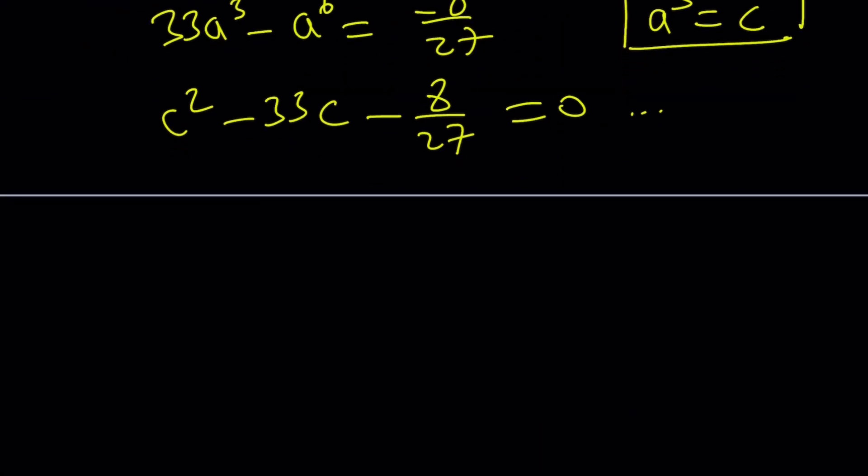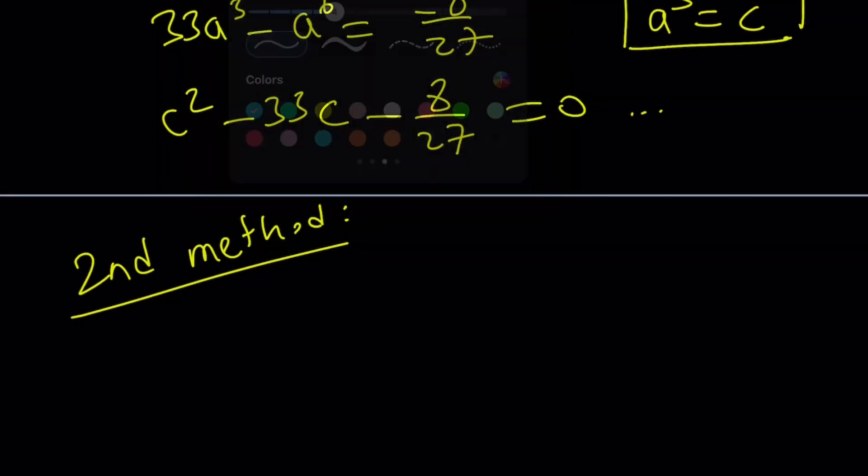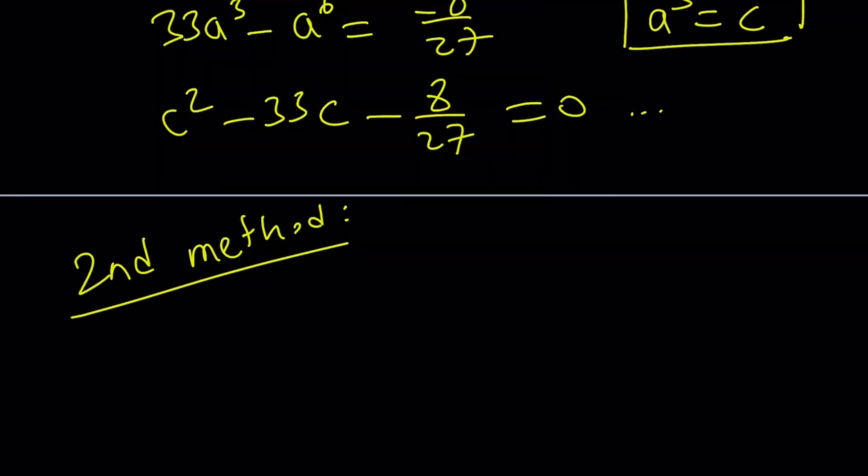Instead of that, let's go ahead and do a nicer method. And obviously, this nice method is not always going to work. This is going to be a special type of cubic. And obviously, this is a competition level problem. Competition problems, there's almost always a trick, because you have to solve the problem in a few minutes.